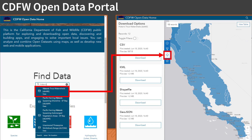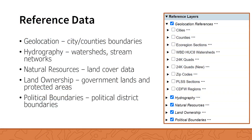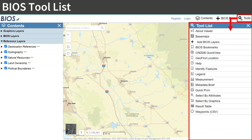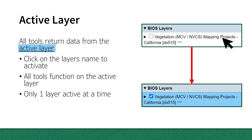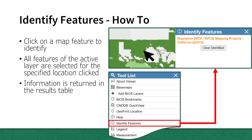Several categories of reference layers are preloaded into the BIOS viewer for ease of use. They are found in the contents panel on the left and are grouped according to content. Reference layers can be turned on and off in the map and can be made active like any other data layer in BIOS. The tools in BIOS are found in the tool list, which can be accessed via the tool button in the upper right in the banner across the top of the viewer. All tools in BIOS work with the active layer. To make a layer active, click on the dataset name in the contents panel. The active layer will be given a blue highlight. If no layer is active and a tool which requires one is opened, you will be prompted to activate a layer first. Only one layer can be active at a time.